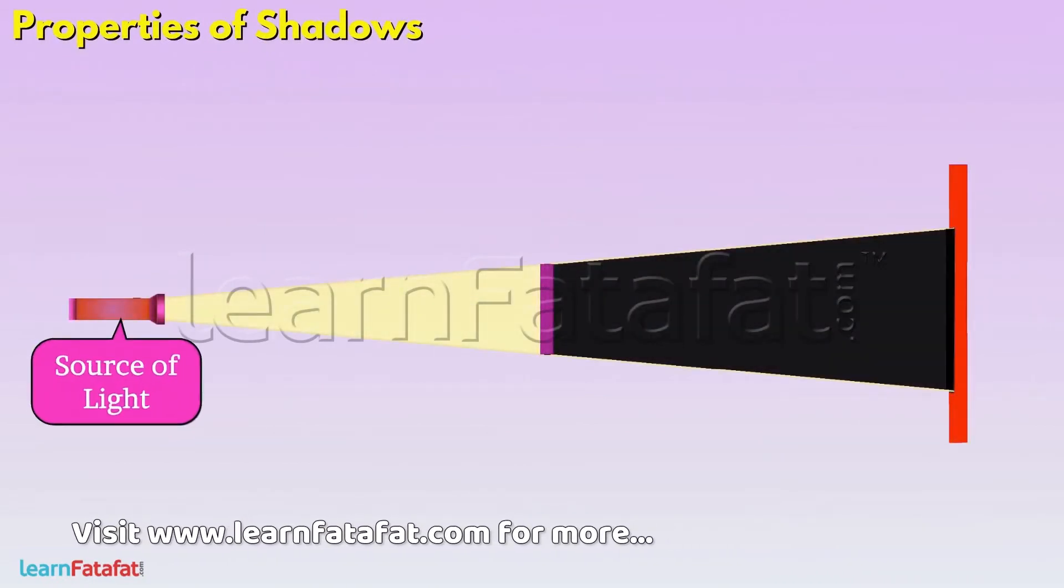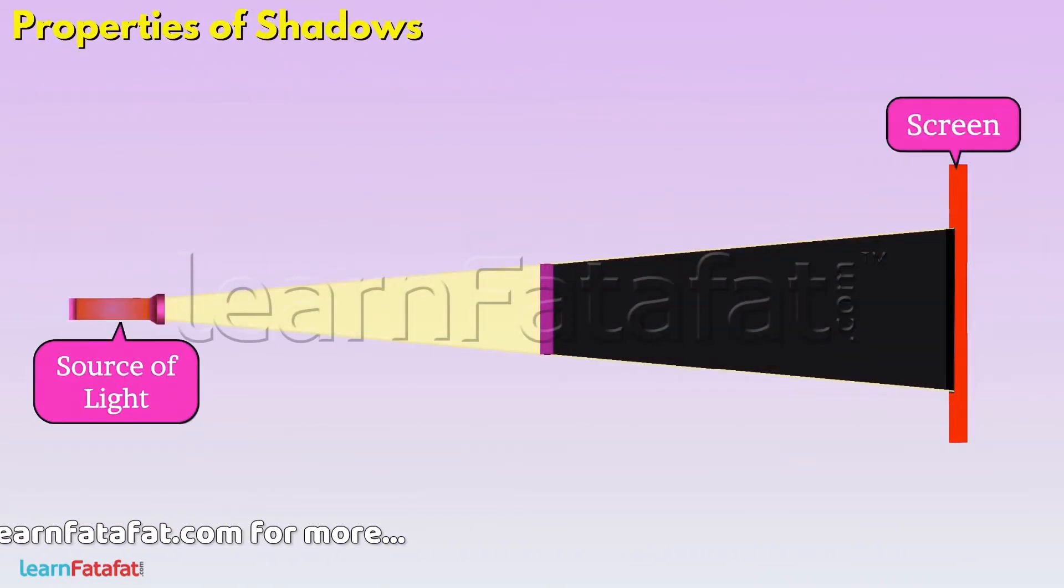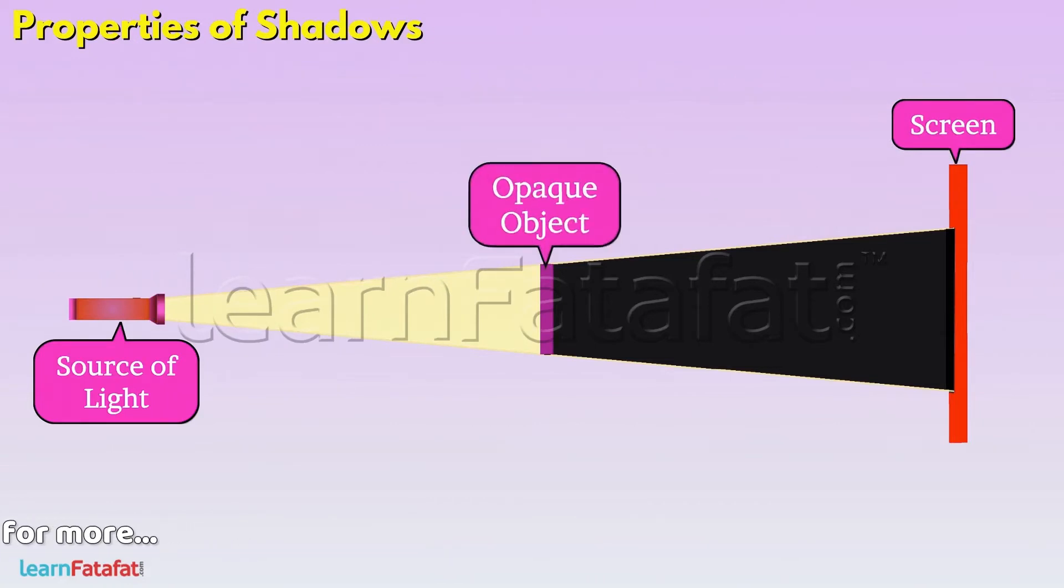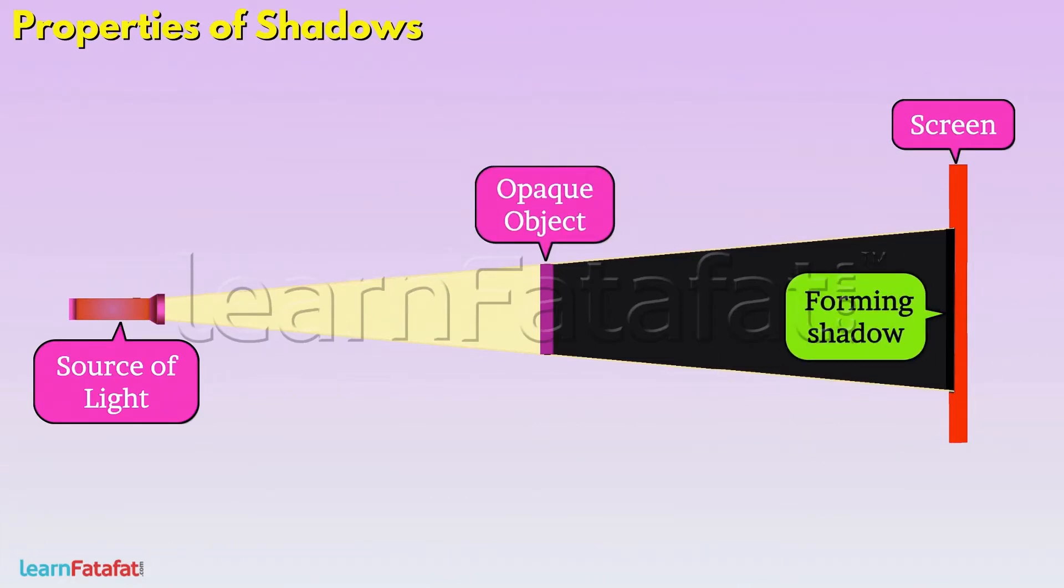Properties of shadows. There is need of source of light, screen and an opaque object for forming the shadow of the object.